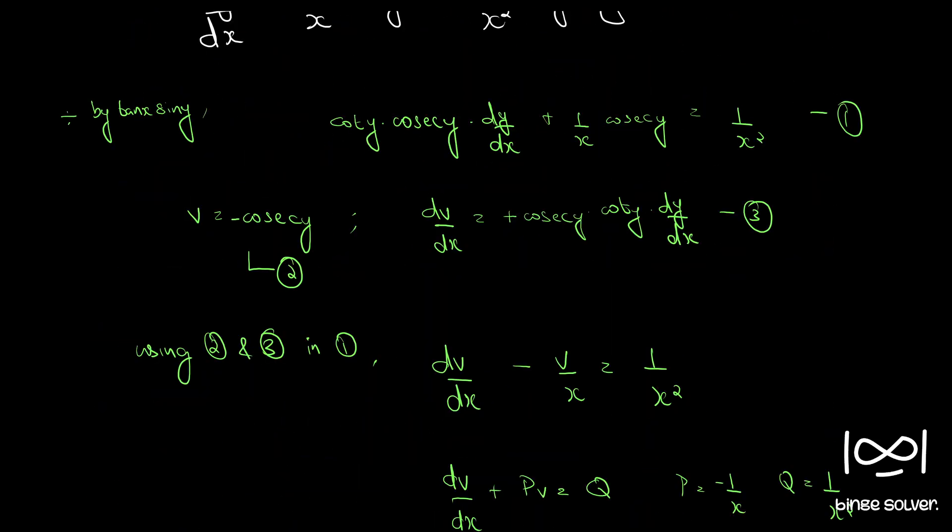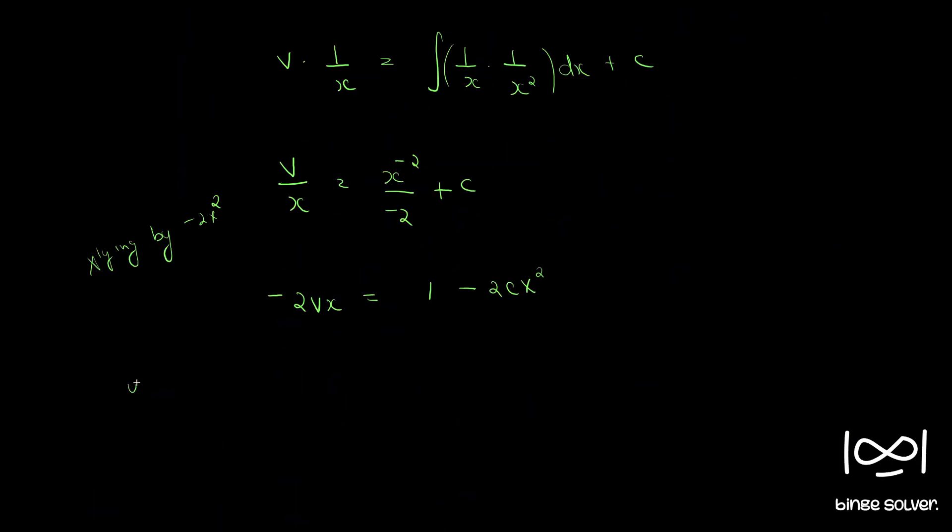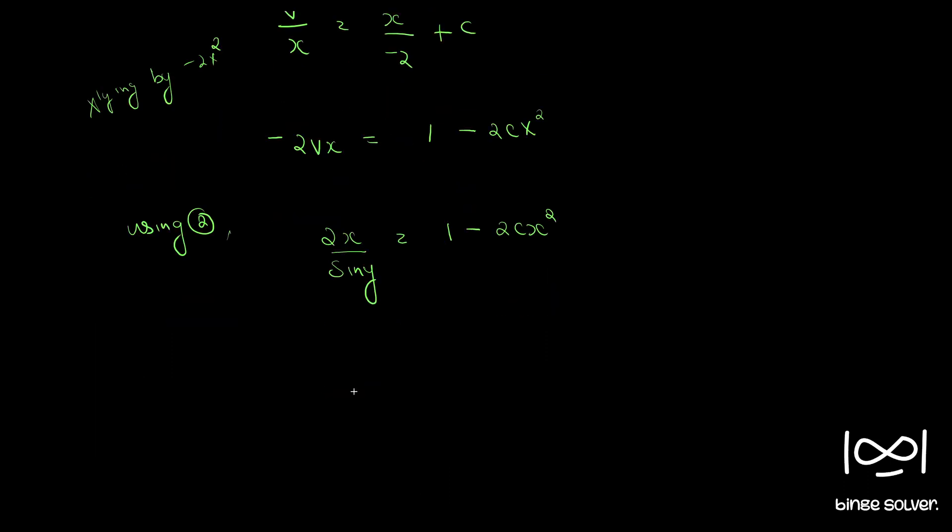If you see our v is minus cosec y, if you substitute for v using 2, we have minus cosec y, so becomes 2x cosec y. If you write as sin y, we have 2x/sin y equals 1 minus 2cx². So 2x equals, you take sin y to the other side, we have sin y into 1 minus 2cx².